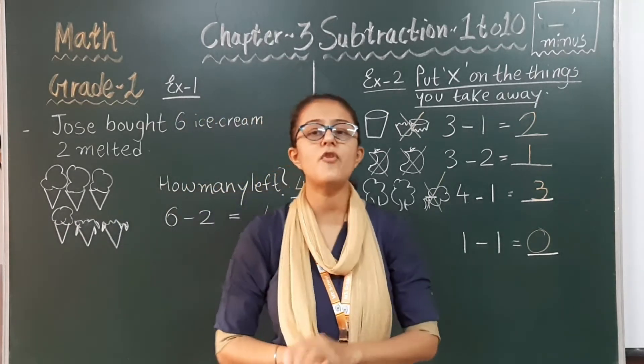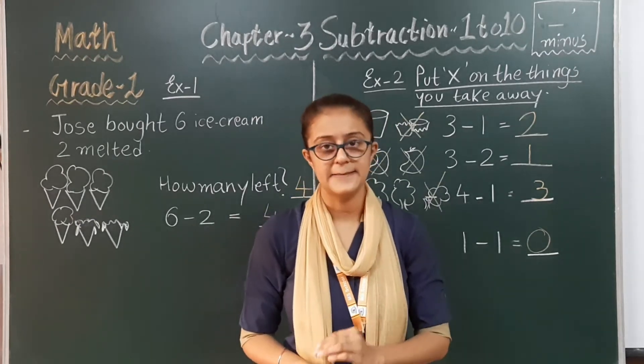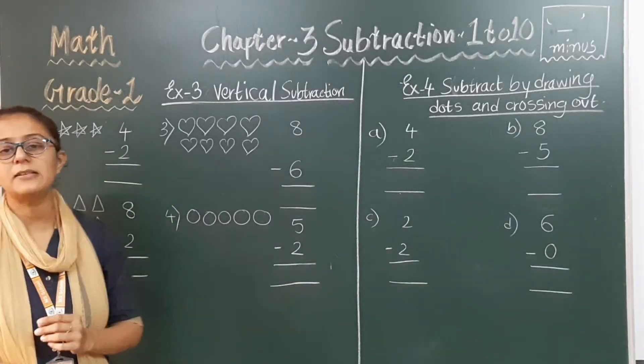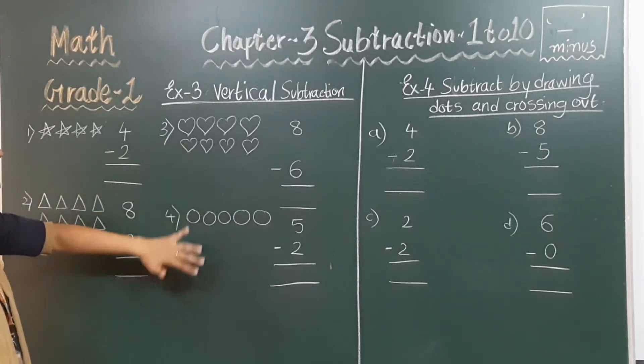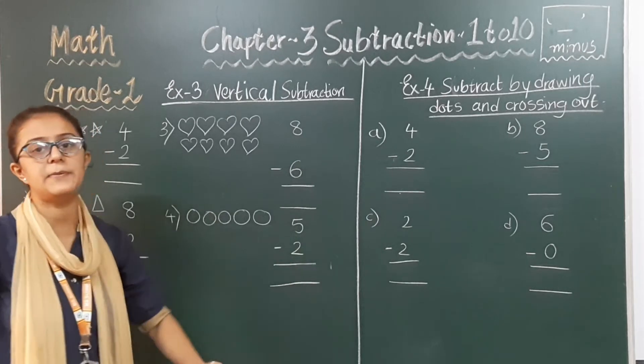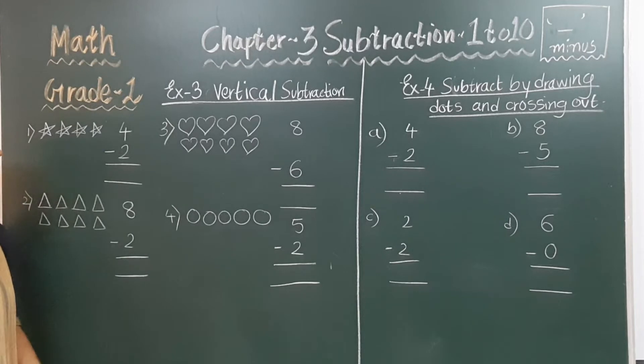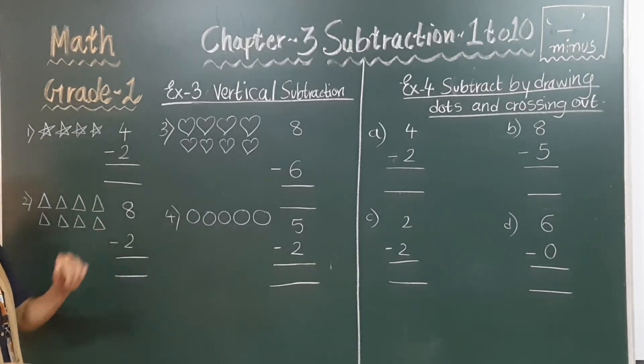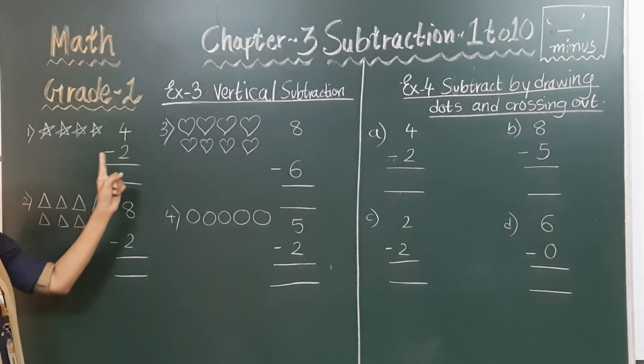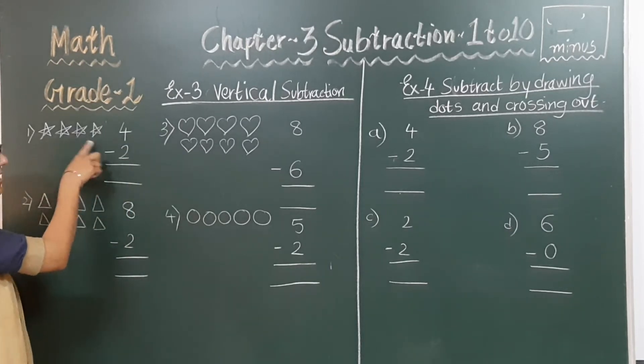Yes students. Now we are going to move forward to our next exercise. That is exercise number three. So this is exercise number three, that is vertical subtraction. In this you can see there are pictures given to you. In front of that pictures you can see the digits given to you. So let's start from the first number. Number first, you can see there are some stars and the digits given to you that is four minus two. How much? So we have to find it.